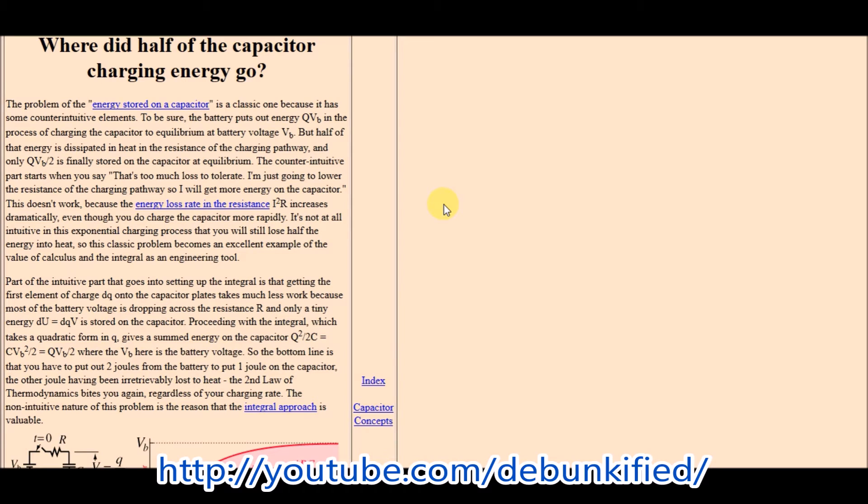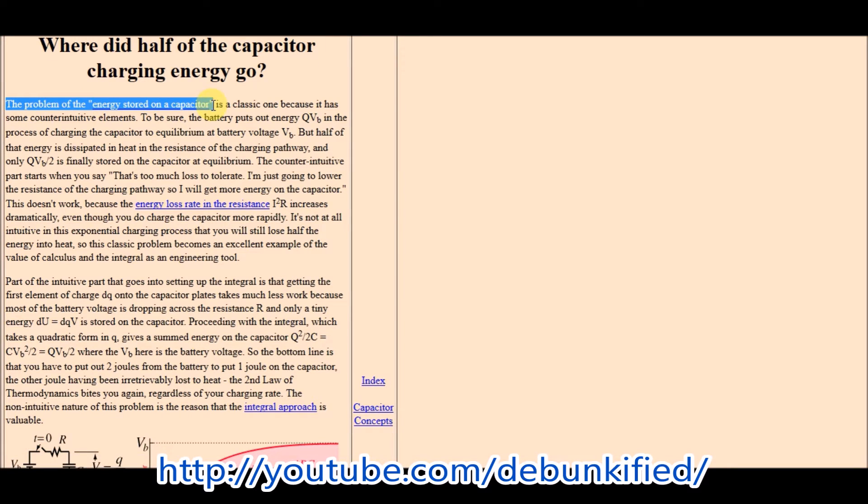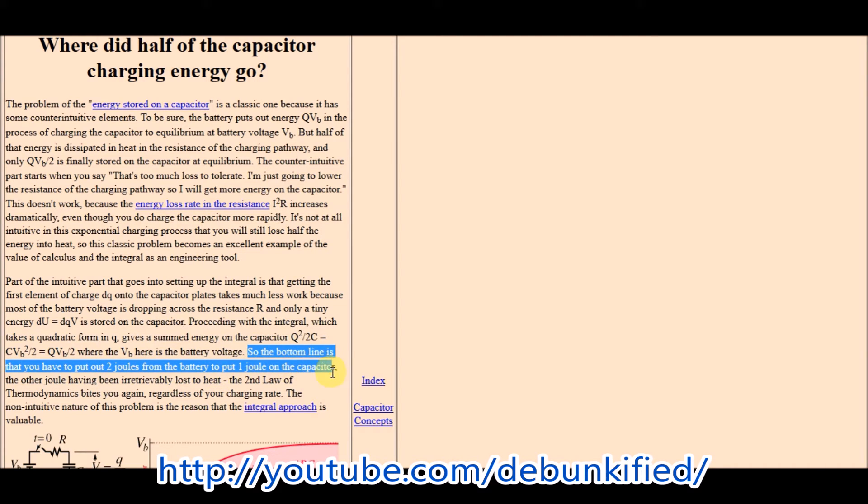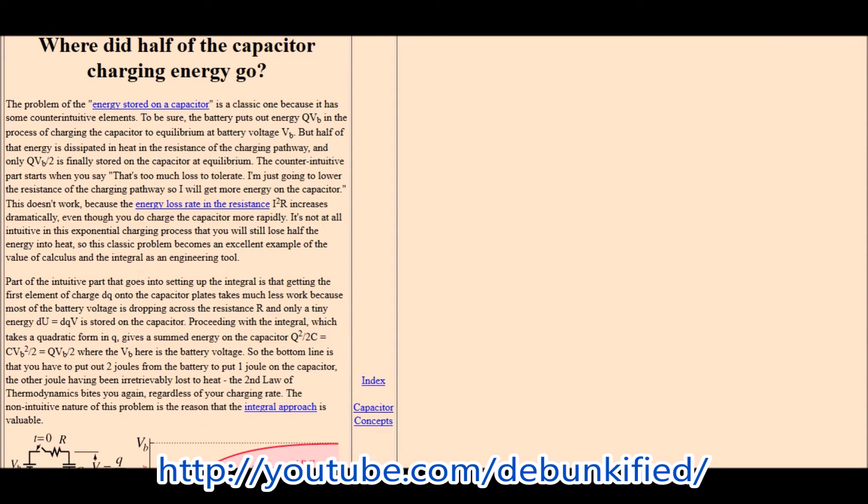Here are two websites, references that I found, that you can go download these links for yourself. I'll have the links down below on where did half of the capacitor charging energy go, and then the problem of the energy stored on a capacitor is a classic one because it has some counterintuitive elements and so forth. Down here it says, so the bottom line is that you have to put out two joules from the battery to put one joule on the capacitor, the other joule having been irretrievably lost to heat. The second law of thermodynamics bites you again, regardless of your charging rate. We're losing half of the energy from transferring it from the battery to the capacitor.